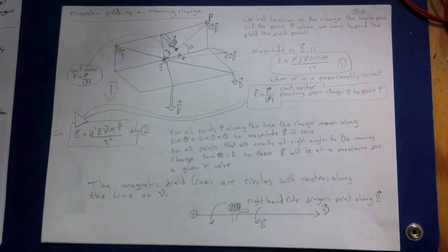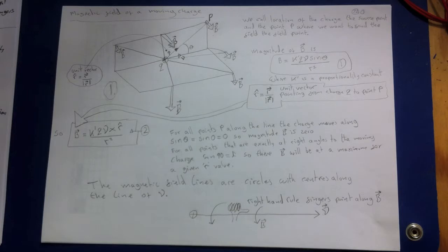Recall that the field lines for the electric field of a point charge radiate outward from the charge. The magnetic field lines are completely different in character. For a point charge moving with velocity V, the magnetic field lines are circles with centers along the line of V, lying in planes perpendicular to that line.